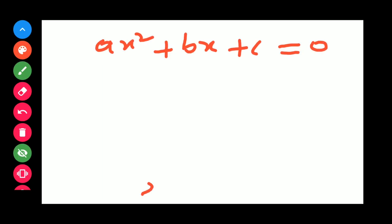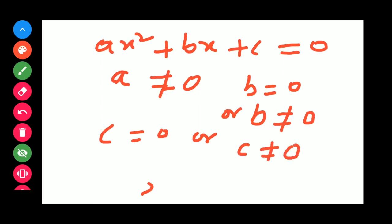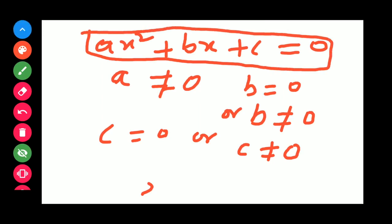In this form, A is not equal to 0 — A never becomes 0. B may be 0 or may not be equal to 0, and C may be 0 or not equal to 0. So always remember, this is the standard form of a quadratic equation.